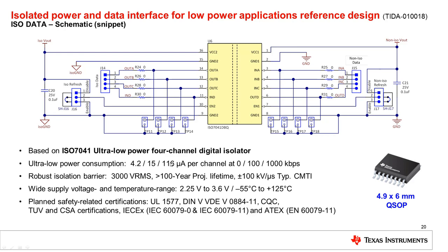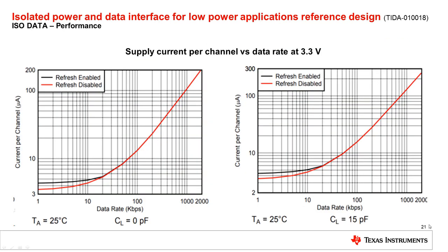The power consumption is ultra-low: roughly 4 microamp per channel in standby, 15 microamp at 100 kilobit per second, and 116 microamp at 1 megabit per second data rate per channel. The temperature range is extended from minus 55°C to plus 125°C, and the wide supply voltage range goes from 2.25 volt to 3.6 volt. The supply current per channel performance of the digital isolator is represented in two graphs from the datasheet, and measurements with the reference design showed a very good match to those datasheet graphs.